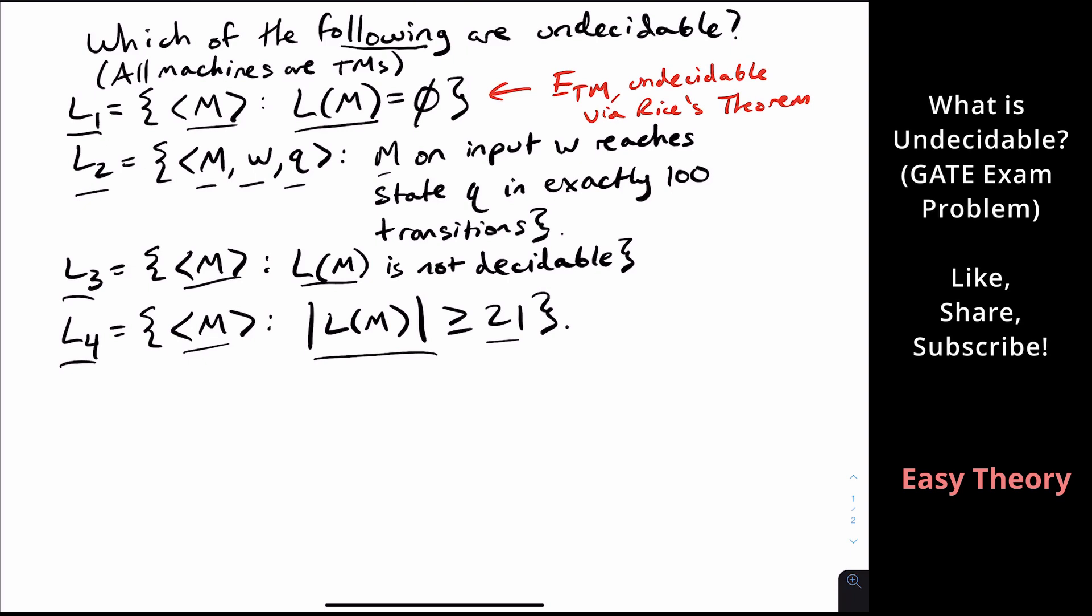So now let's look at the second one. Well, it says that that machine on a particular input W reaches a particular state Q. Well, this is decidable. So why is it decidable? That's the question we should always answer.